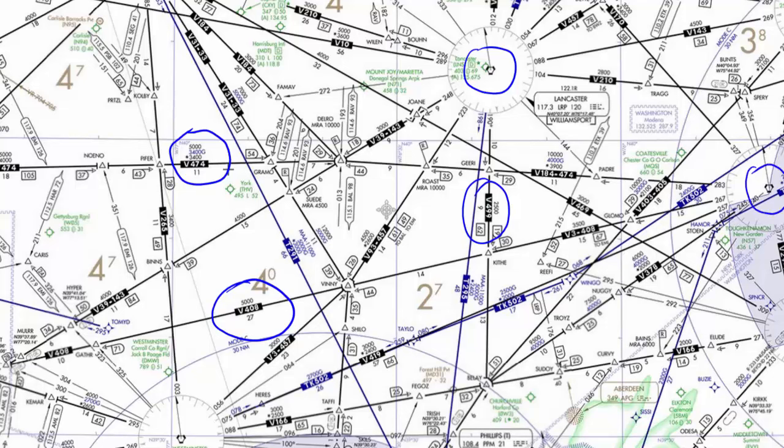Airways, as you can see, aren't always directly between VORs, so we have all these fixes in between as well to help us make turns and get from A to B in the most efficient way possible.